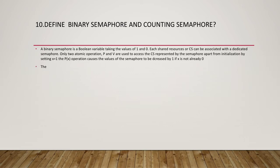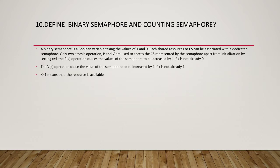X equal to 1 means the resource is available, and X equal to 0 means the resource is being occupied. For example, a single printer being accessed by two machines — X decides everything. X equal to 1 means the resource is available and you can use it; X equal to 0 means the resource is occupied, so you must wait.